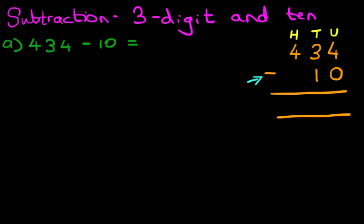So the first one on the right-hand side is 4 minus 0. What is 4 minus 0? That's nice and easy. The answer is 4. Now we're going to do the tens. What is 3 minus 1? That's right. It is 2.